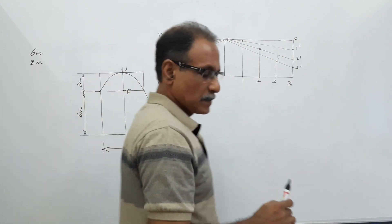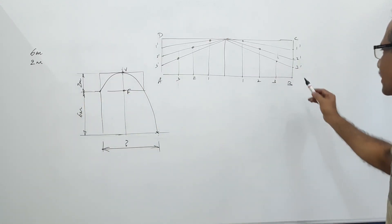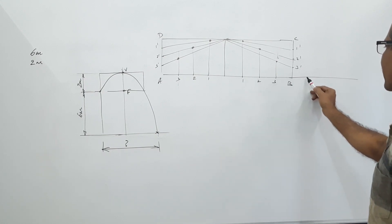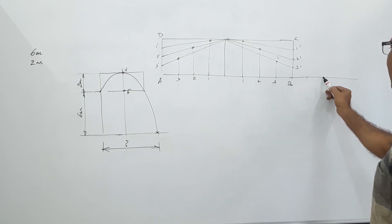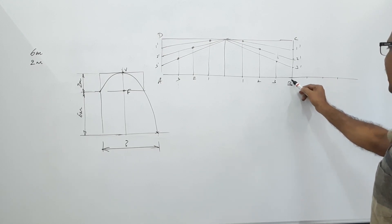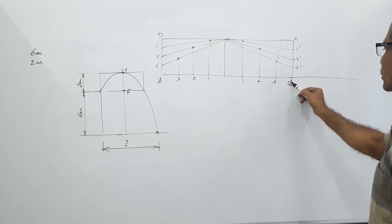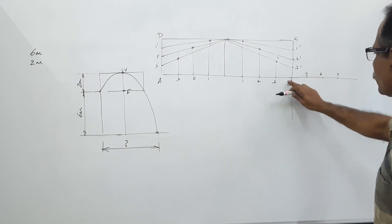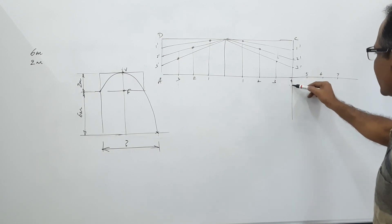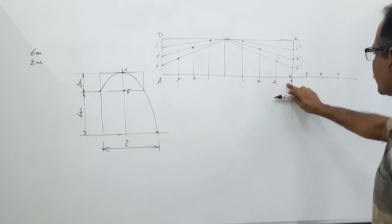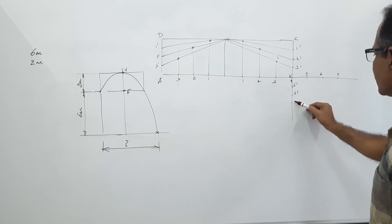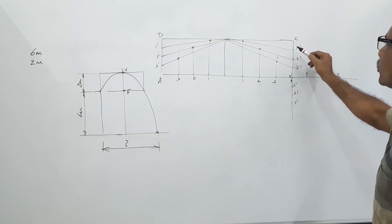Then extend it further. Take this distance in your divider and mark again — we get three more points. This is three, therefore this is four, this is five, this is six, this is seven. Extend this down. Take this distance and mark here. If this is four dash, this is five dash, same distance six dash, seven dash.